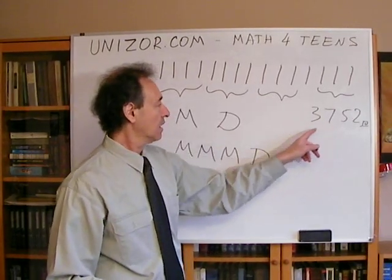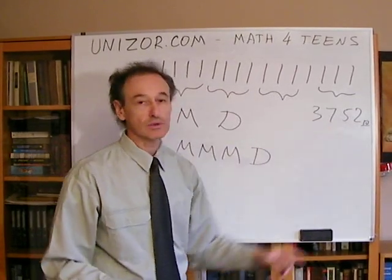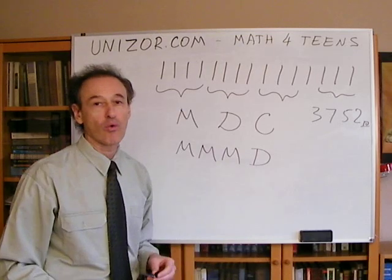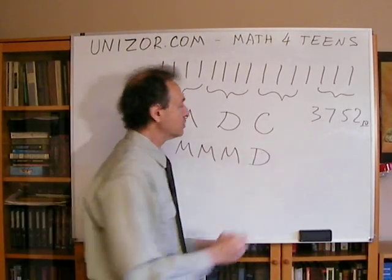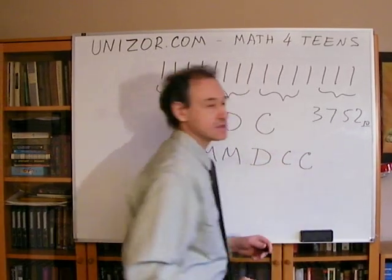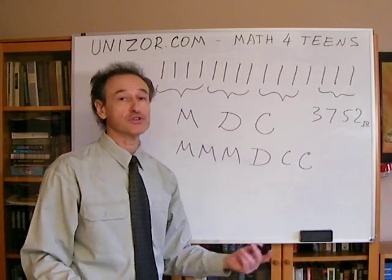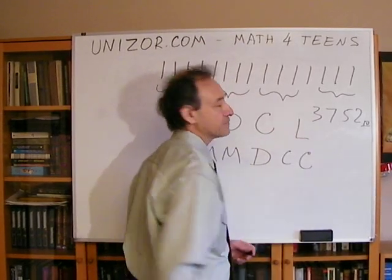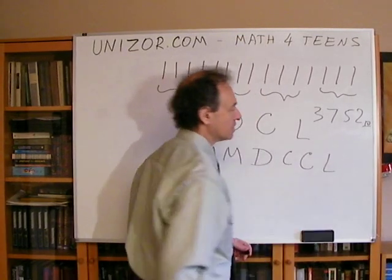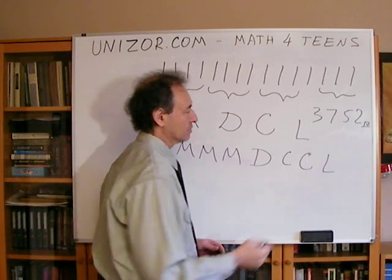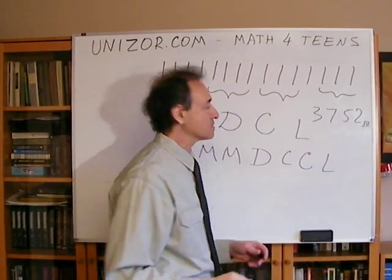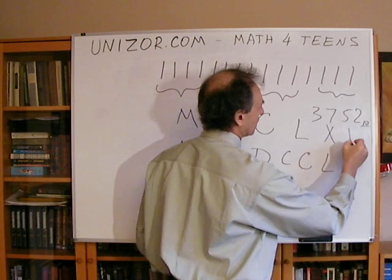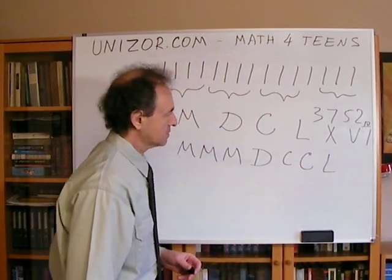They decided we will break it down again into groups of 100. They invented another character, C, for 100. So 252 is two letters C, which means 200. Now we have 52 in the remainder. They invented another character, L, for 50. So 52 can be represented as 50.